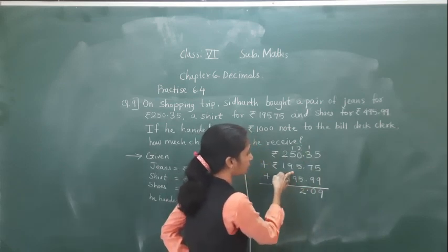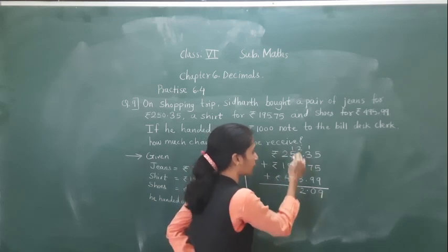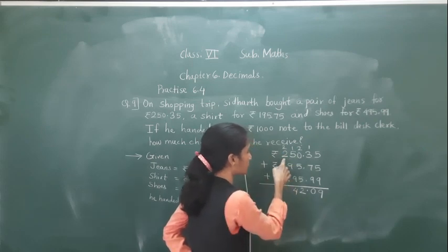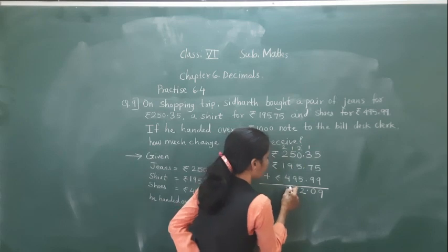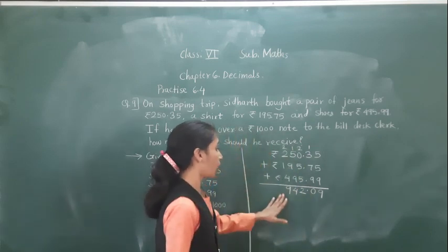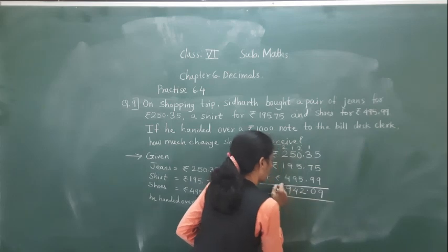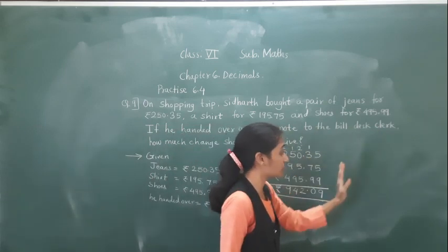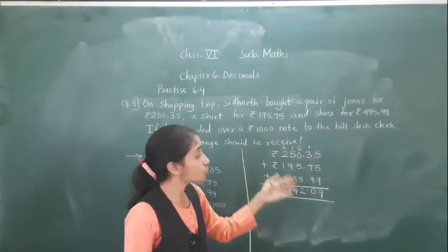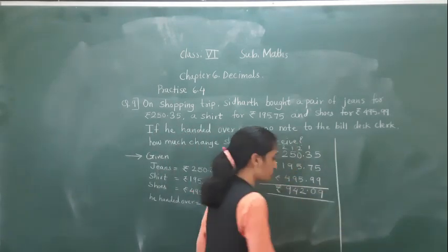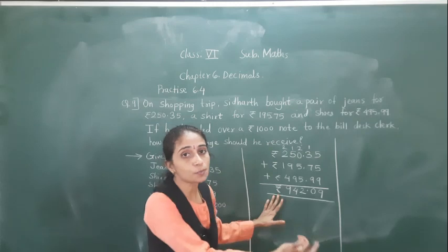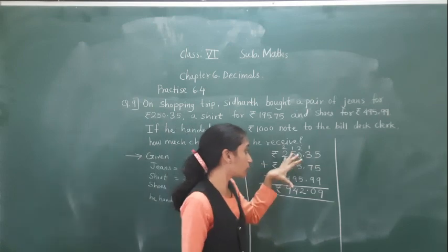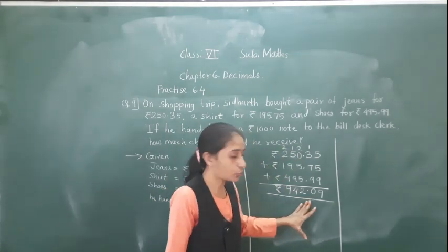1 is carried. 9 plus 9 is 18, 18 plus 5 is 23, and 1 more is 24. 4 plus 1 is 5, 5 plus 2 is 7, 7 plus 2 is 9. So the total cost is 942.09 rupees.